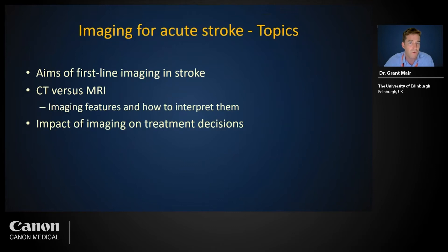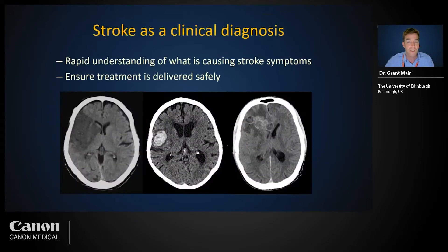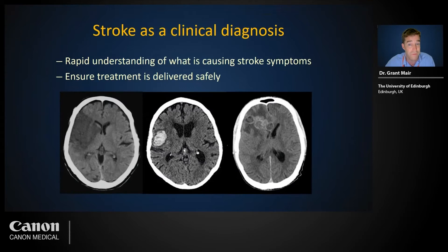Where possible I will relate relevant imaging features to the European Stroke Organization (ESO) guidelines. Stroke is often said to be a clinical diagnosis, so imaging is used to determine the underlying cause. All three patients — ischemic stroke, hemorrhagic stroke, and stroke mimics such as tumor — may present the same way clinically. The treatment for each is very different, and getting it wrong could be harmful or even fatal.